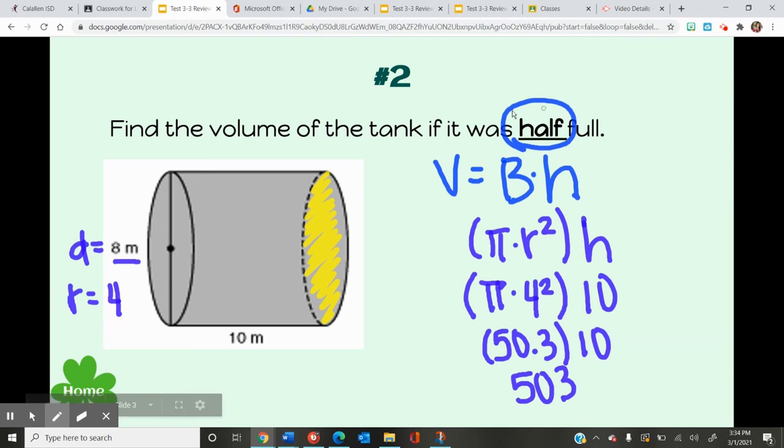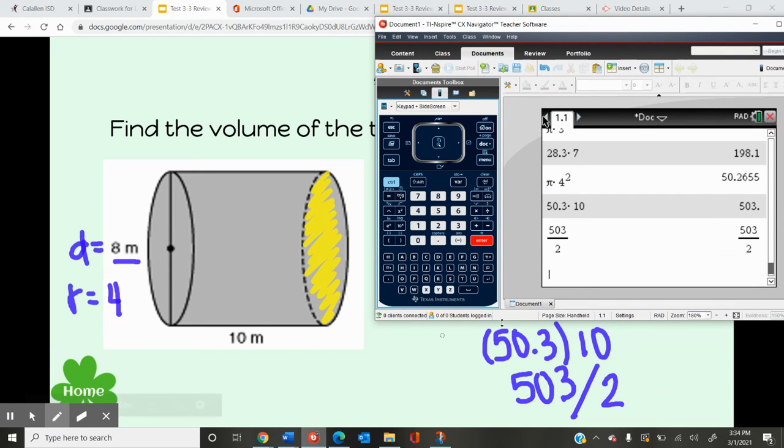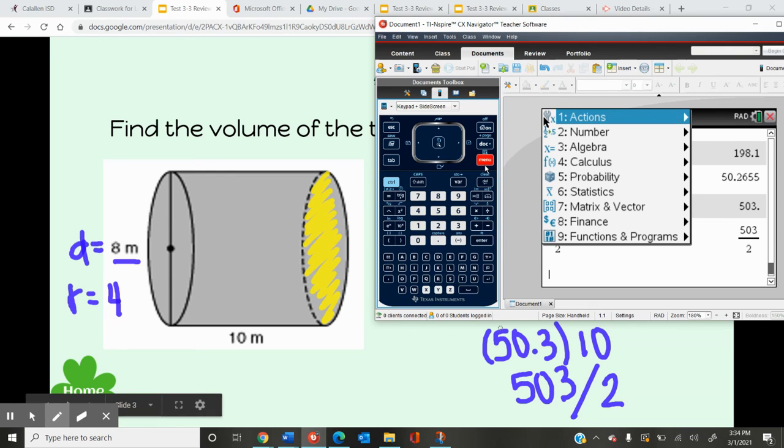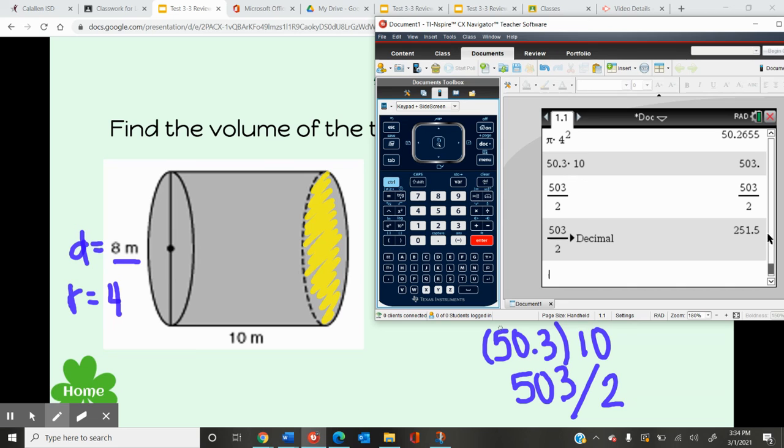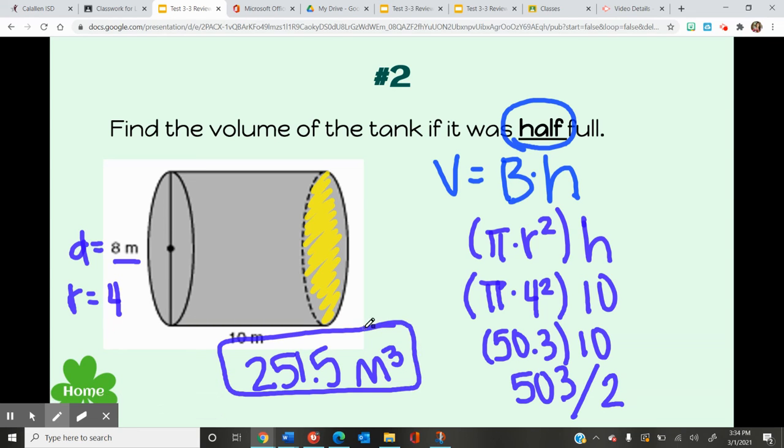However, I want to find the volume when it is half full, so I'm going to divide this by 2. So 503 divided by 2, and to convert that to a decimal, we convert it by pressing menu to 1, and the volume of this cylinder is 251.5 meters cubed. This is going to be the volume of this tank when it is half full.